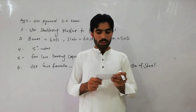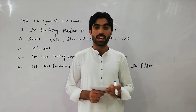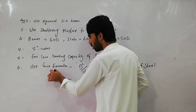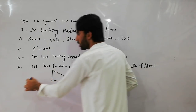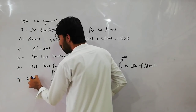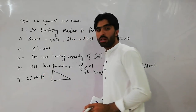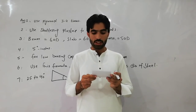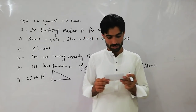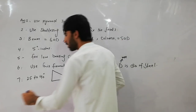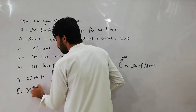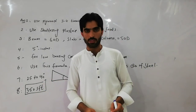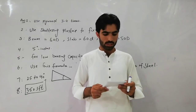Question number seven: what is the suitable angle for a staircase? Question number eight: how much square foot area can one gallon of paint cover? One gallon of paint can cover 350 square feet of area, whether it is a wall, slab, or similar surface.